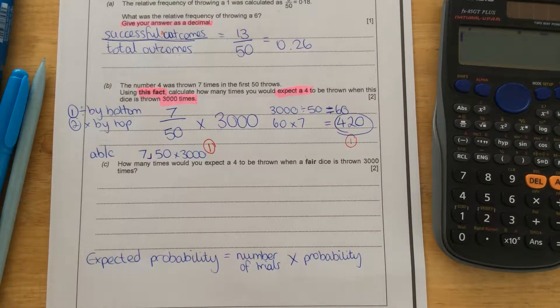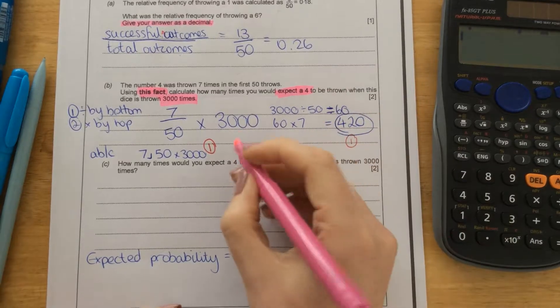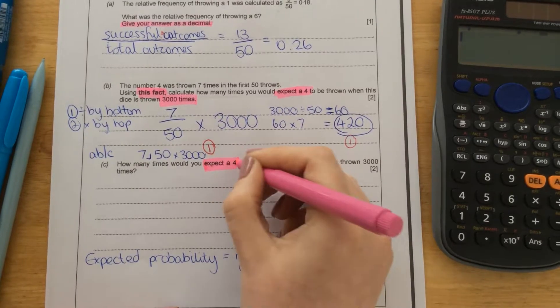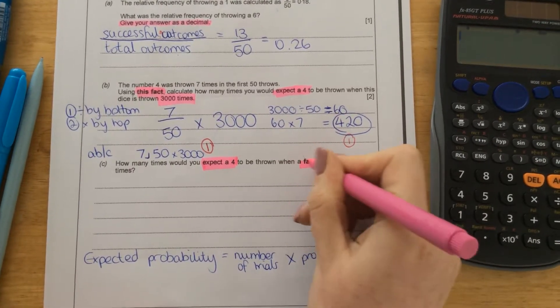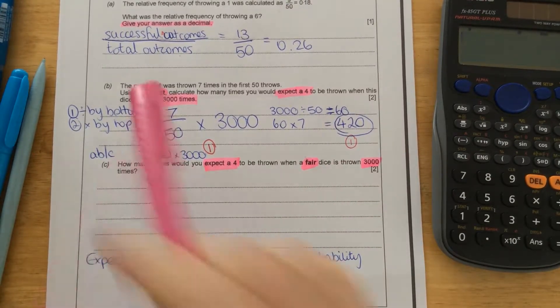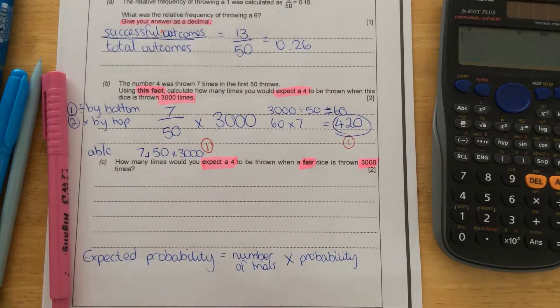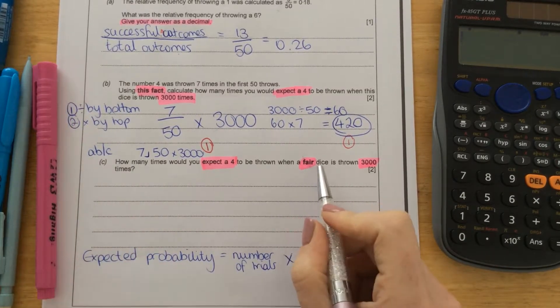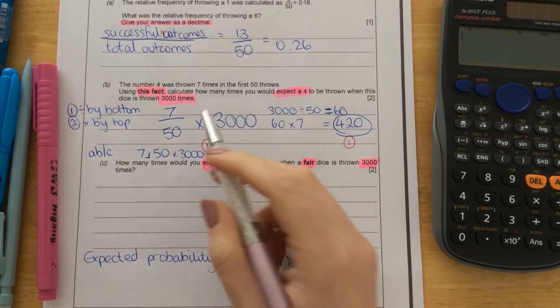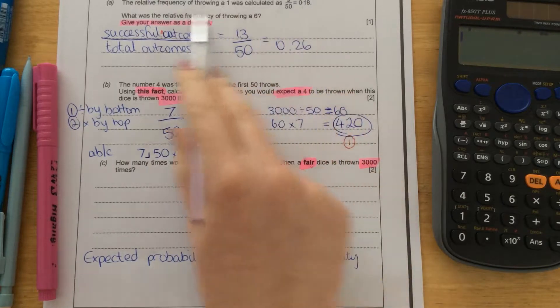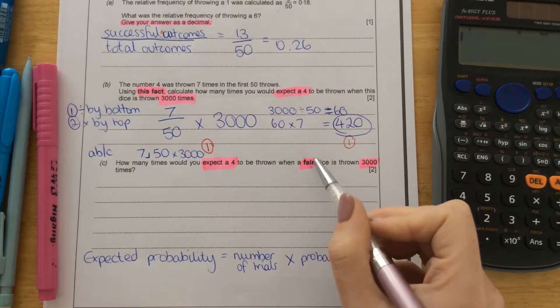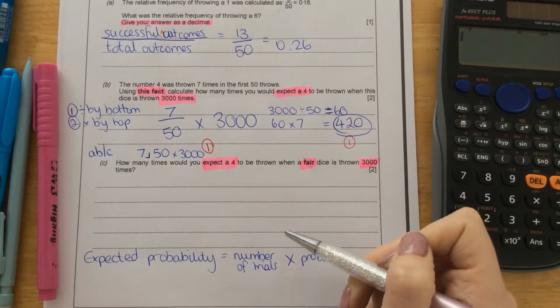How many times would you expect a 4 to be thrown when a fair dice is thrown 3,000 times? So the difference in this question is it says a fair dice. So this time we need to know the probability of rolling a 4 on the fair dice. So instead of using that fact, that within those 50 times, the 4 came up 7 times, we're going to use the fact that the standard probability of getting a 4 on a die.